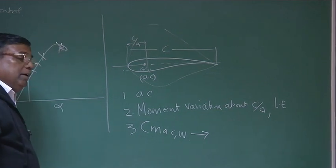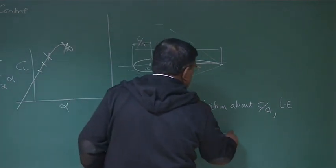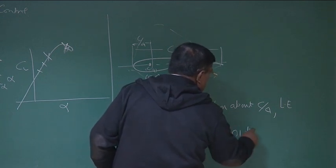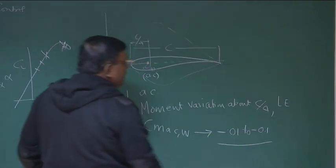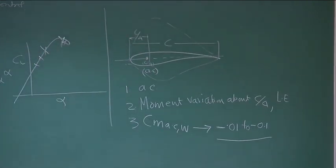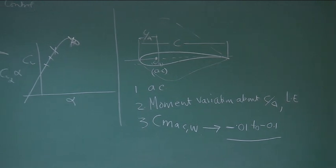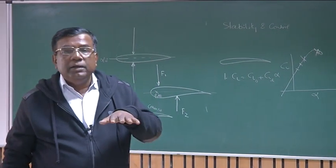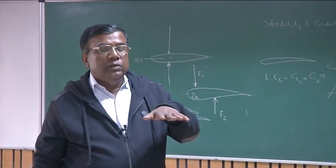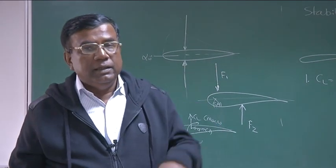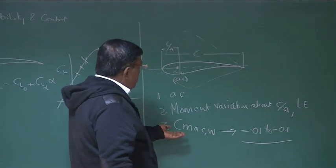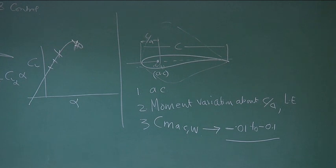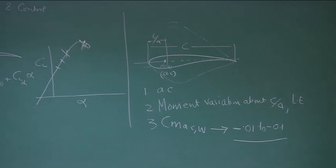For a cambered aerofoil, the sign of CMAC wing is negative — typically values from minus 0.01 to minus 0.1. So if I see this cambered aerofoil, it has a concentrated moment about C by 4 with a negative sign. As far as pitching moment convention is concerned, nose up is positive and nose down is negative. So CMAC wing will create an effect in terms of the angular motion of the airplane.